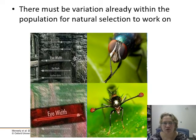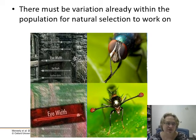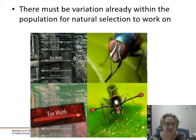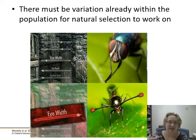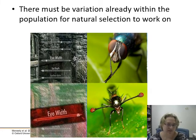One key thing: there has to be variation already within the population for natural selection to work on. If there's no variation and selection is equal for everyone, you're all going extinct. If you don't have genetic variation so that somebody has something useful, you're flat out of luck.